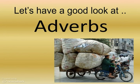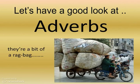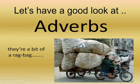Let's start by having a good look at adverbs. They're a bit of a rag bag. Unlike verbs and nouns and adjectives, which are fairly discrete entities — a noun is a thing, an adjective is a describing word — these are fairly easy to define. Adverbs are not really like this. There are lots of different kinds of adverbs, so if you're looking at something in a sentence and you don't know what it is, it may well be that it's an adverb.